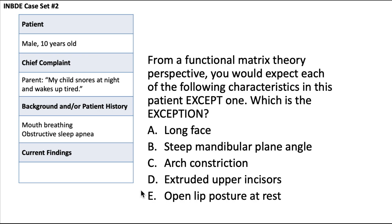In this case set we have a 10-year-old male whose parent says the child is snoring at night and wakes up tired. The patient history includes mouth breathing and obstructive sleep apnea. From a functional matrix theory perspective, you would expect each of the following characteristics in this patient except one — which is the exception? Go ahead, pause the video, think through this question, and then we'll go over it together.